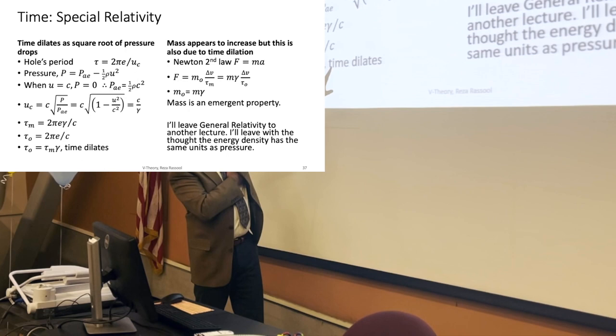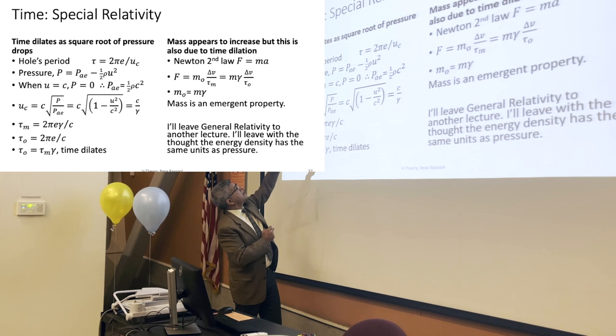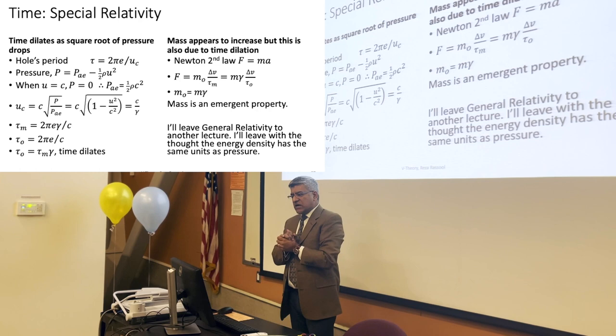And that term under the square root is given by 1 over gamma in this formulation. When you apply the consideration of how pressure causes the critical speed to change, you end up with the same time dilation factor that special relativity expresses.